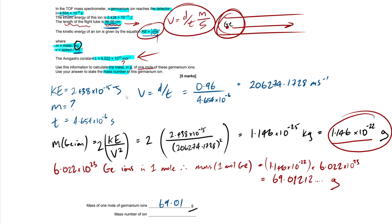The last part asks us to use our answer to state the mass number of the germanium ion. Our result of ~69 grams per mole represents the relative atomic mass. Under this topic, we want the mass number to be an integer, so the closest integer value is simply 69.